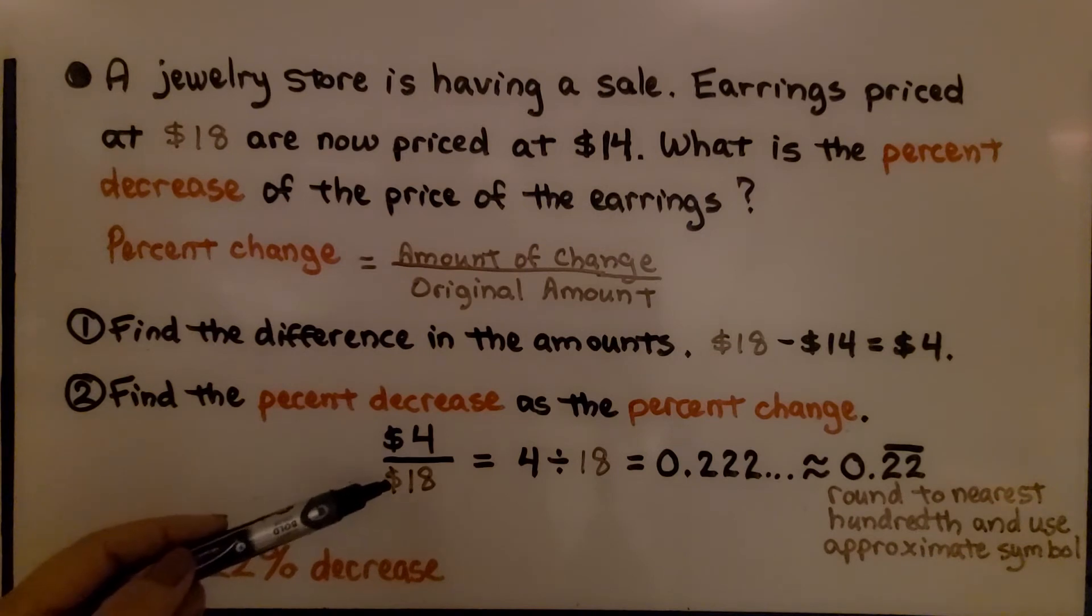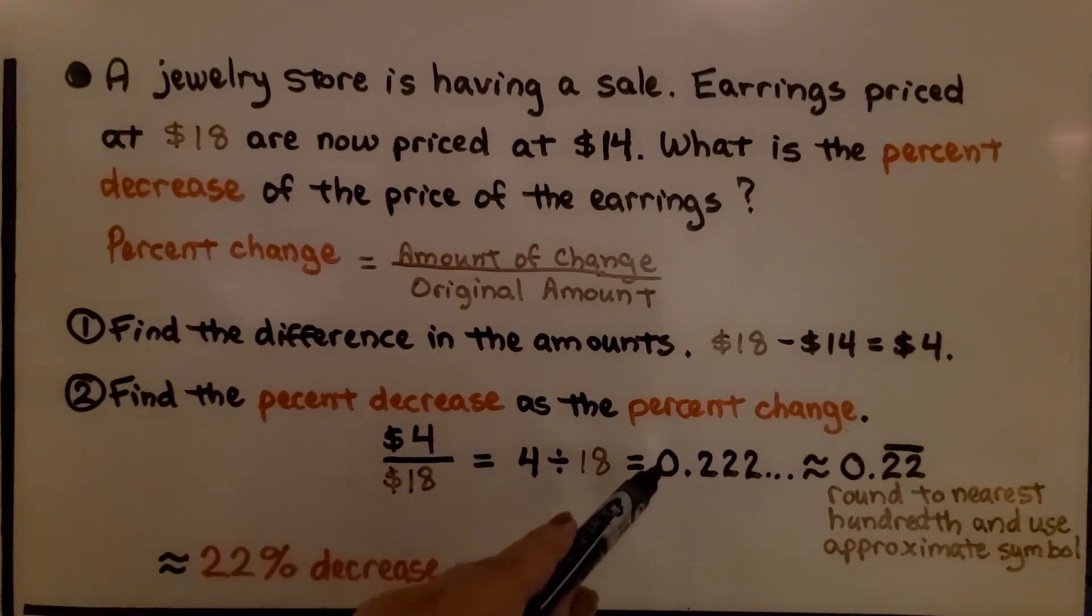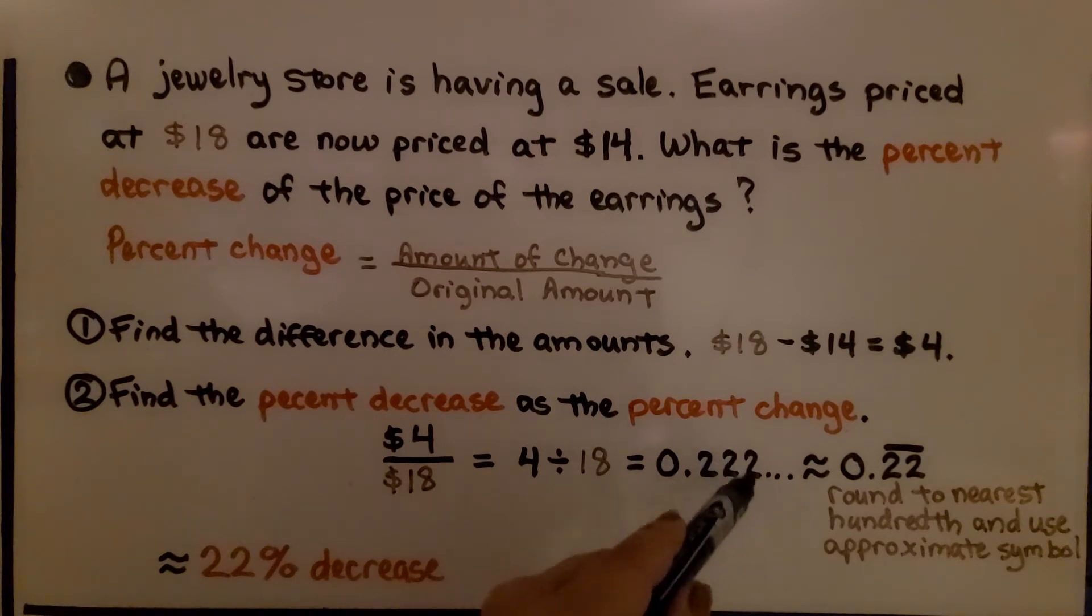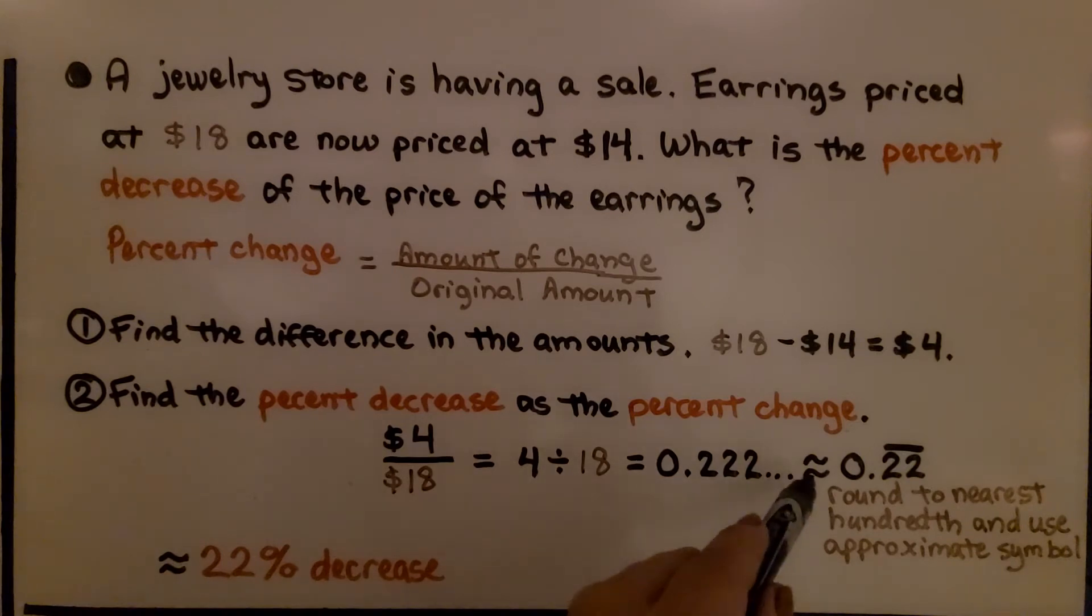So now we find the percent decrease as the percent change. We have $4 divided by $18. We have 4 divided by 18. That comes out to 0.222222. The 2 keeps repeating. So we can say it's approximately 0.22 to round to the nearest hundredth and use an approximate symbol. That means it's approximately a 22 percent decrease.